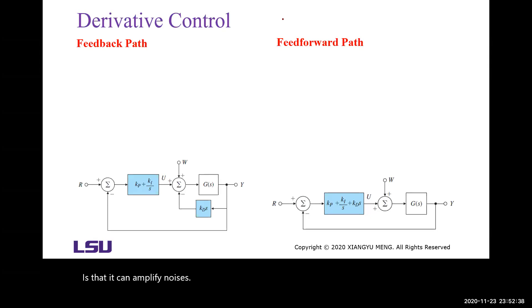We may use the D controller in two different ways. We can either put the D controller in the feedback path or in the feedforward path. For example, if there is a step change.